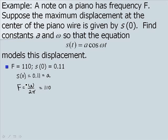So we want to solve for omega. We're going to multiply both sides by 2 pi. So we end up with a value of omega equal to 2 times 110 and then multiply by pi. So we end up with 220 pi. So then we end up with an equation S of t equal to 0.11 cosine of 220 pi t.